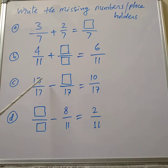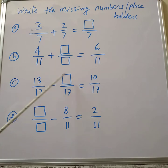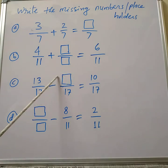Now this is the difference between two fractions. So how much do we subtract from 13 to get 10? How much do we subtract? So 13 minus 3 equals 10. So in this missing place we have to write 3.